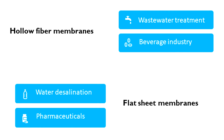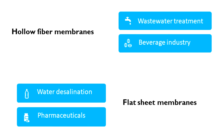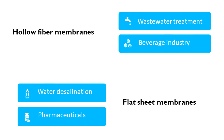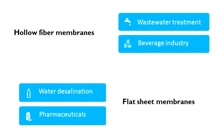Hollow fiber membranes are mostly used in MF, UF, and NF applications. Typical applications are in municipal wastewater treatment, where they remove particles and bacteria, and the beverage industry, where they are used to concentrate fruit juice or remove pulp.